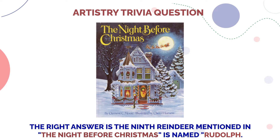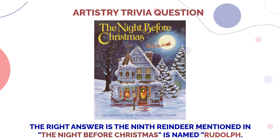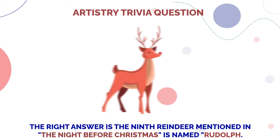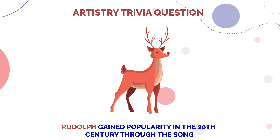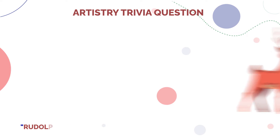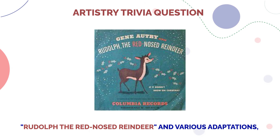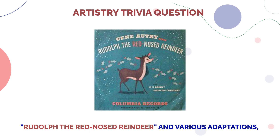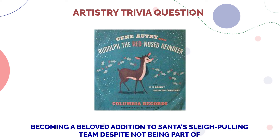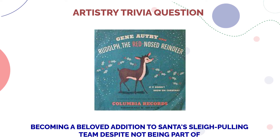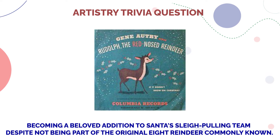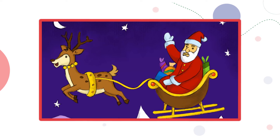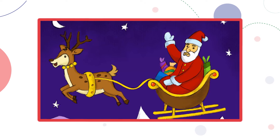Now coming back to the artistry trivia question — the right answer is: the ninth reindeer mentioned in 'The Night Before Christmas' is named Rudolph. Rudolph gained popularity in the 20th century through the song 'Rudolph the Red-Nosed Reindeer' and various adaptations, becoming a beloved addition to Santa's sleigh-pulling team, despite not being part of the original eight reindeer.